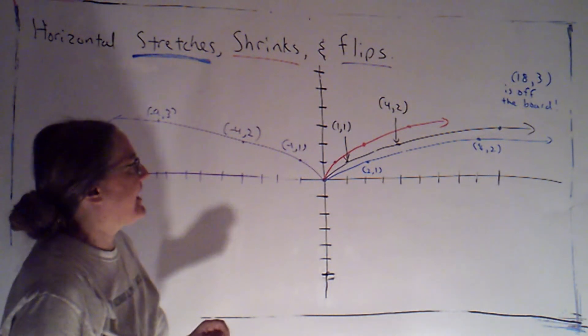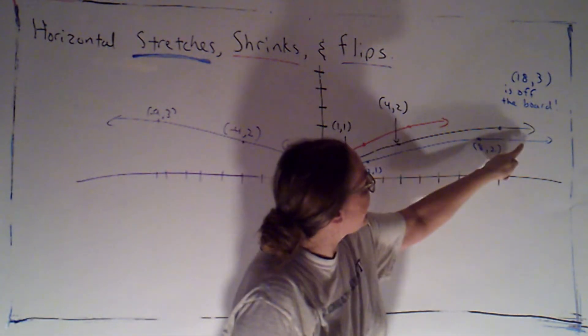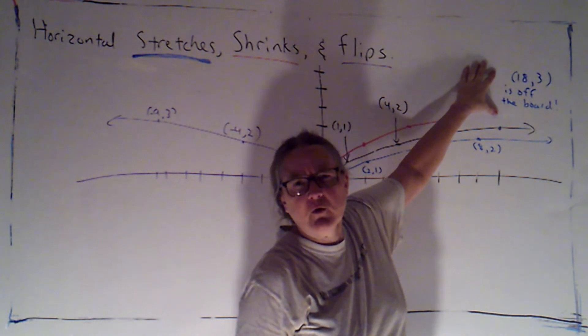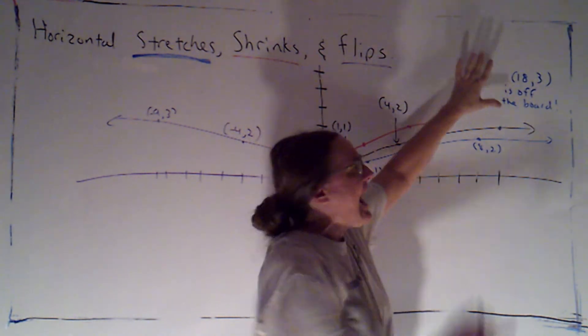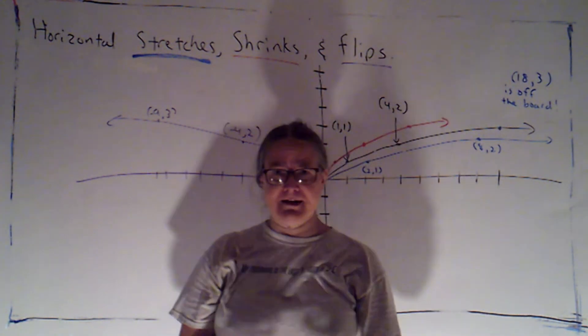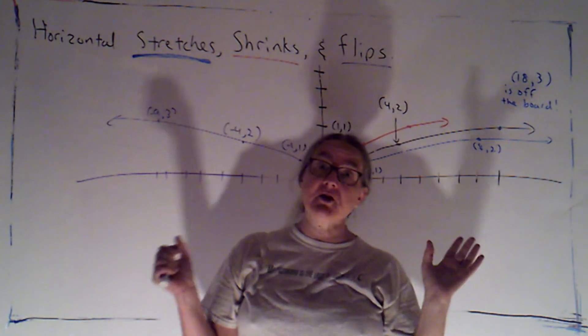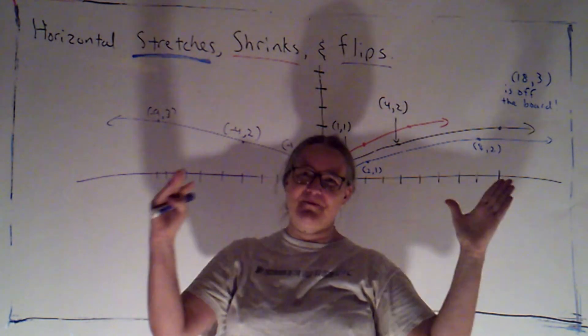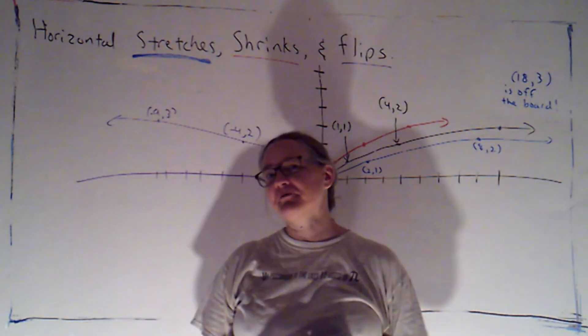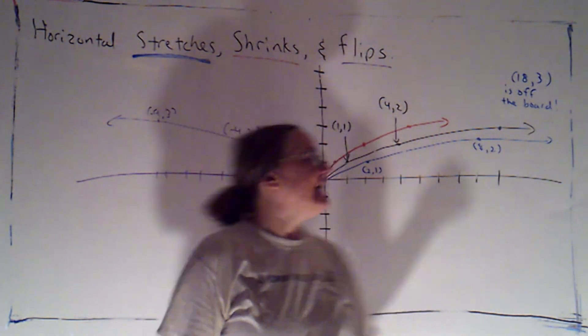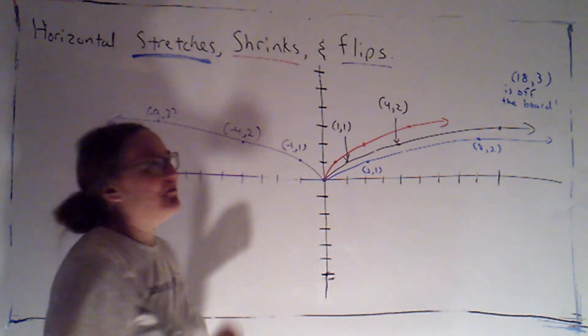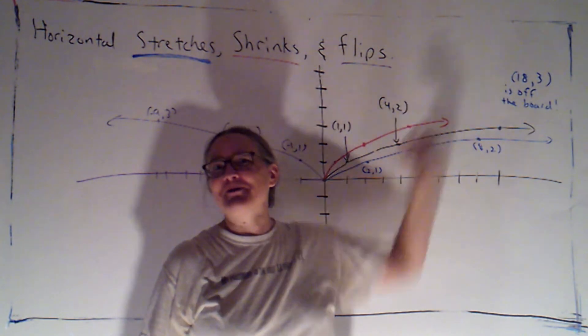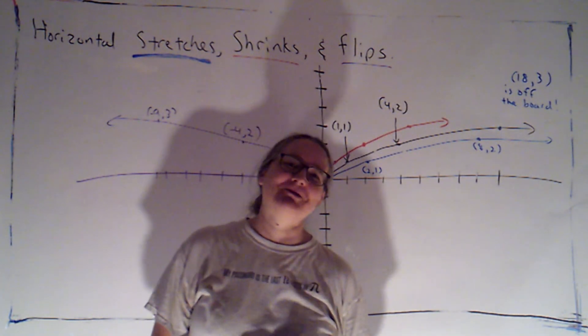One thing I should point out really quickly. When I graphed one half x, we got the point (18, 3). I just made a note here. It didn't fit on the board, so I said it was off the board. I am not here setting a precedent that it's okay to say, oh, I couldn't fit this point. When you're completing work to turn in, I expect you to set up your axes so that there's enough room to plot all of the points. I've got a finite whiteboard here, so I'm just going to beg your indulgence. Do as I say, don't do as I do. Make sure that you plot all points on any work that you submit.